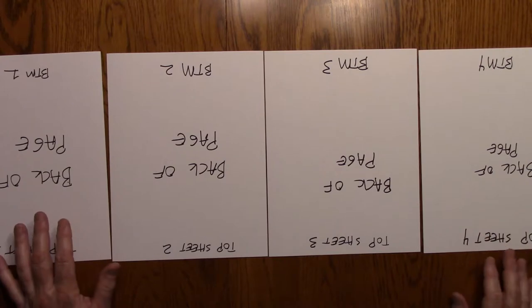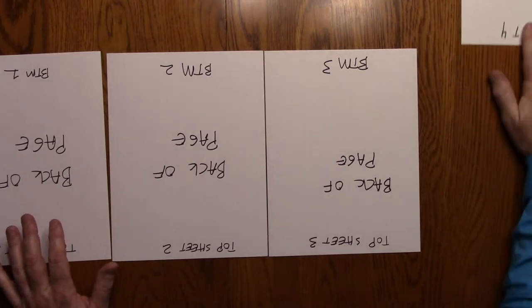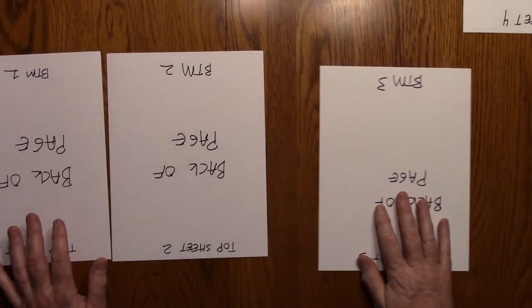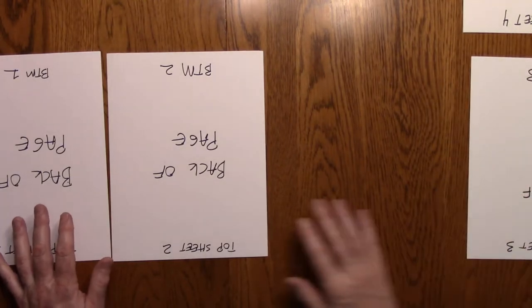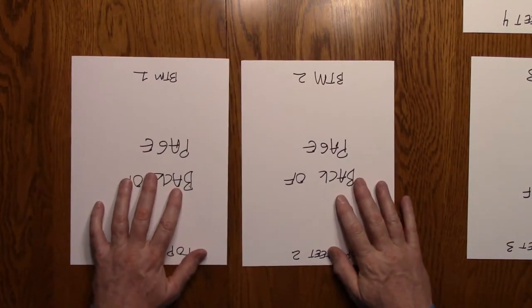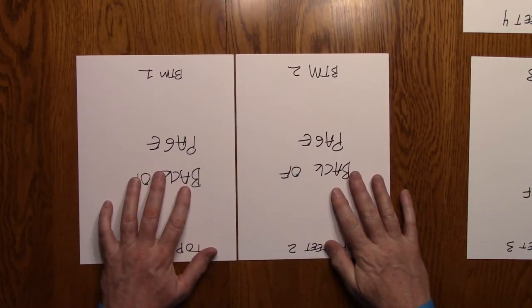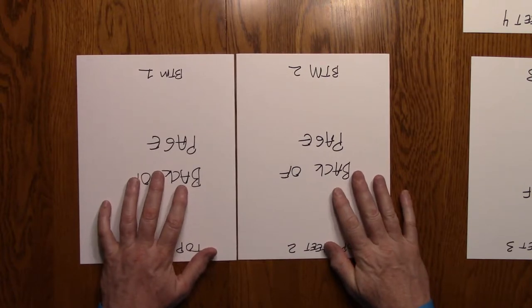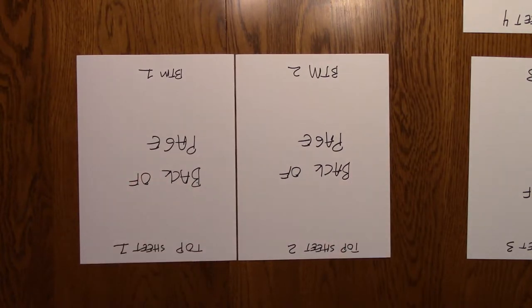Here I'm moving pages four and three out of the way. We're going to tape one seam at a time. So we're going to start with page one and page two, and we line them up. We want to get them close enough so that the gap is about one to two millimeters.